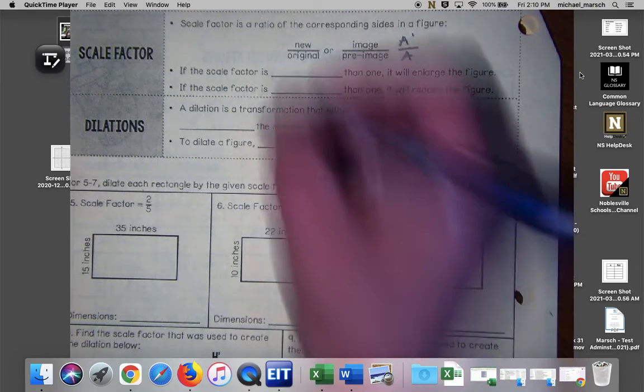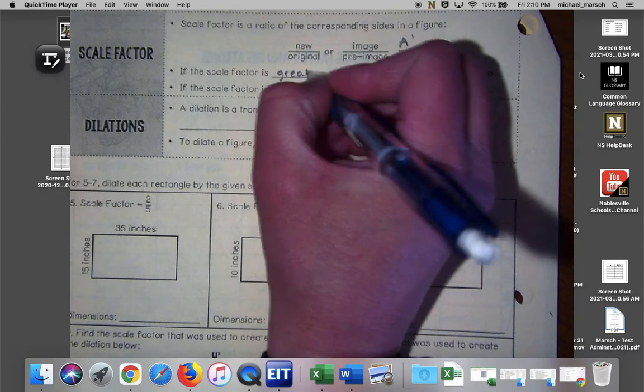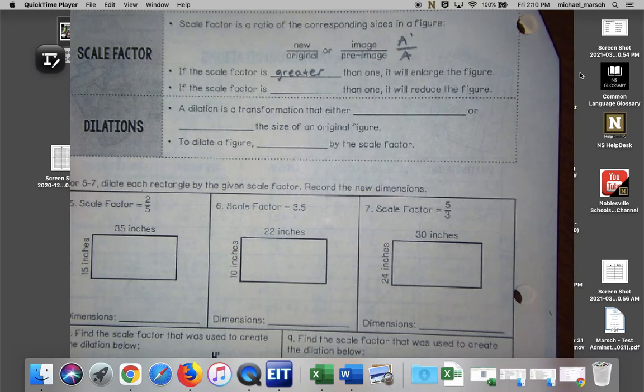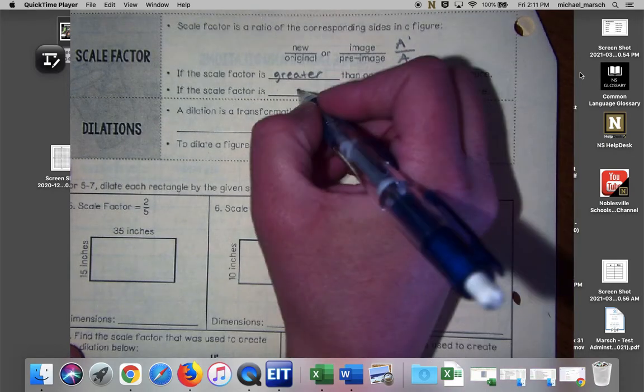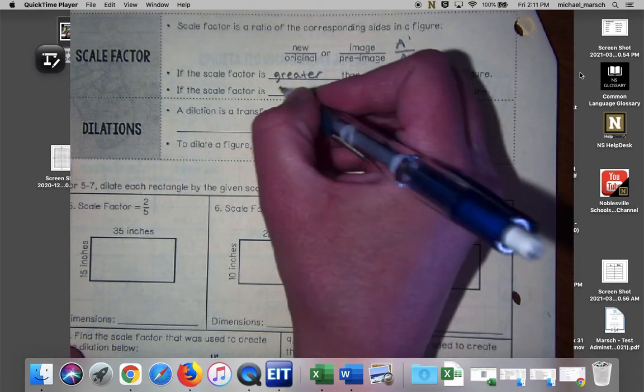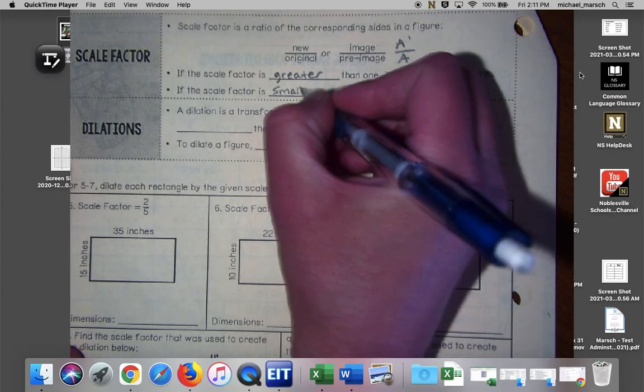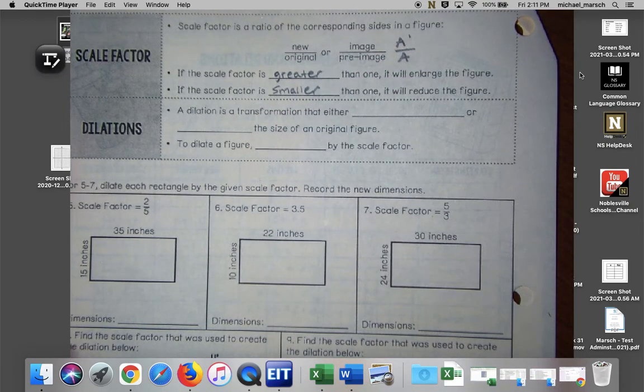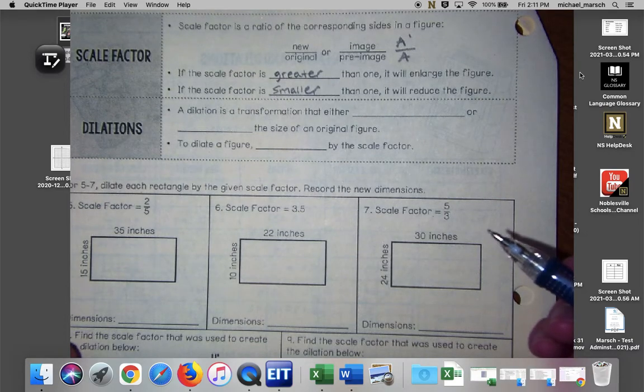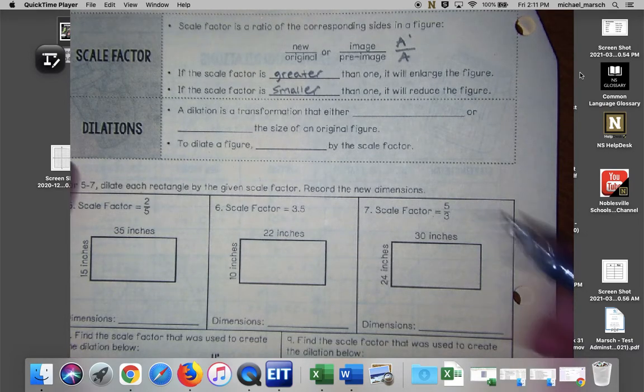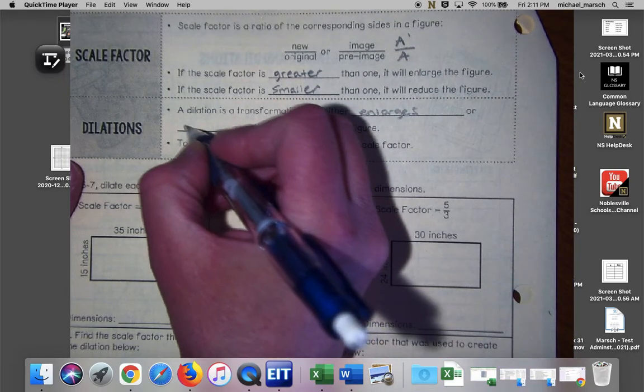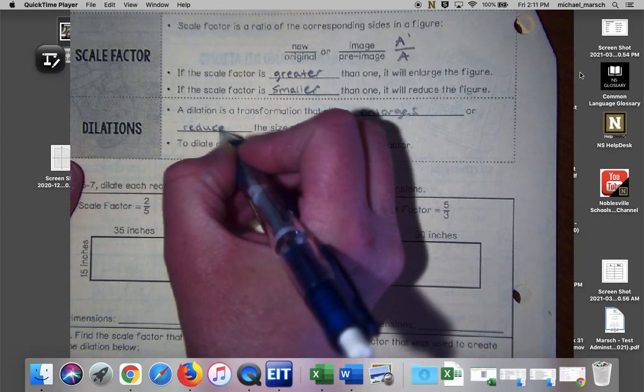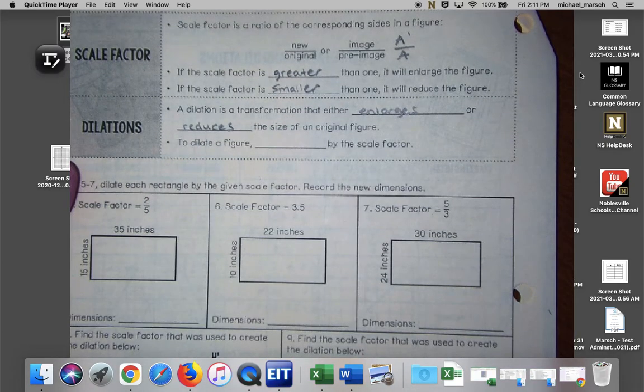If the scale factor is greater than one it will enlarge the figure. If the scale factor is smaller than one, and again we're talking about those fractions and decimals, it will reduce the figure. A dilation is a transformation that either enlarges or reduces the size of an original figure.